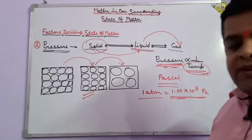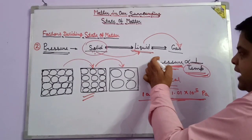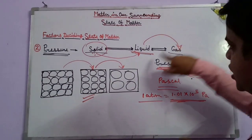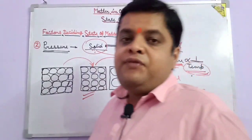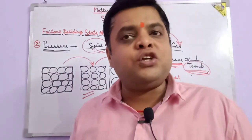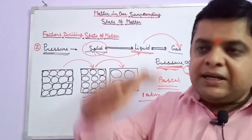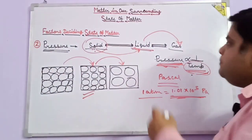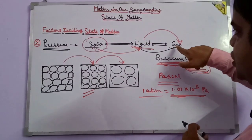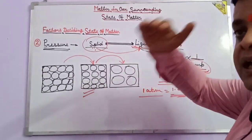When changing any state from solid to liquid or liquid to gas or vapor, if pressure increases then temperature should decrease, or if temperature increases then pressure should decrease. Using these conditions, we can liquefy gases. To liquefy any gas — for example, ammonia — we need to decrease the temperature and increase the pressure. For changing gas to liquid, decrease temperature and increase pressure.